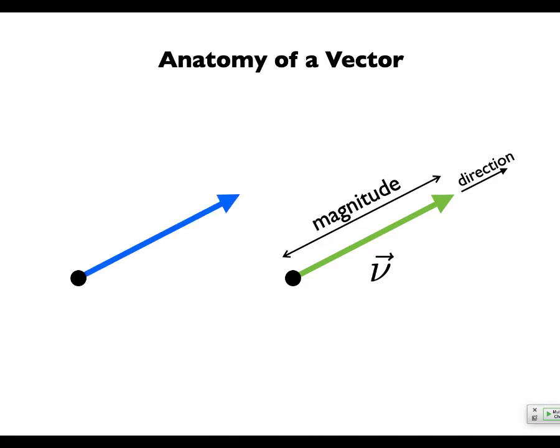This would be like a velocity vector. You'll notice the book and I make all of our velocity vectors green, all of our position vectors blue, all of our acceleration vectors orange, and then forces are red. I tried to be consistent with the book in case you read it, which some people actually do.